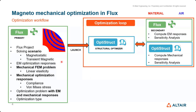Once you start the shape optimization, it will call OptiStruct to change the structure of the lines or boundaries you define. Then it will call Flux to do your electromagnetic analysis and get all the responses. Since this is a new feature, you can also couple mechanical responses into your optimization — OptiStruct is called again, and once all quantities are available, it communicates with the structural optimizer. This loop continues until optimization is complete.